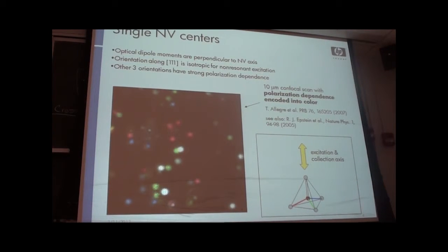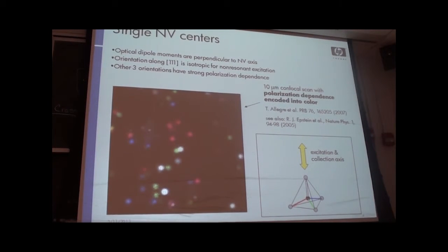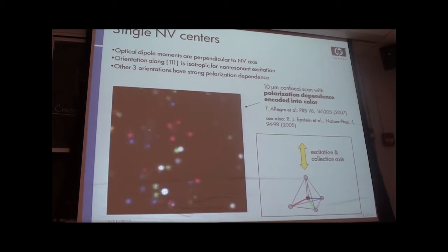If you want to work with a single NV center, the first thing you can do is find them. Typically this is done with scanning confocal microscopy — focusing a laser to a very small spot inside the crystal volume, collecting the resulting fluorescence, and imaging it onto a pinhole for depth resolution. This produces a false color image where the polarization dependence is encoded into color, allowing you to distinguish between the four different orientations of the NV center.